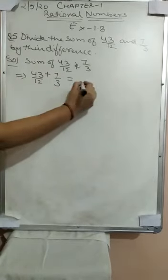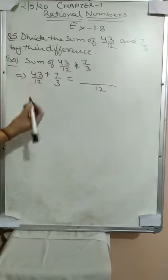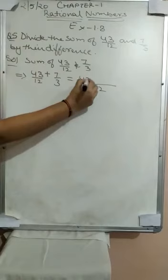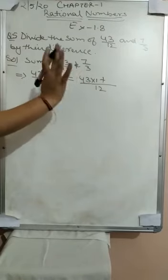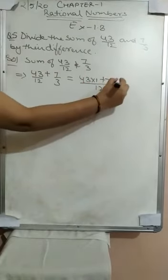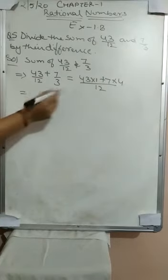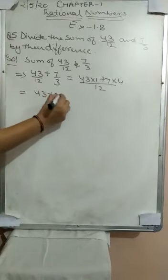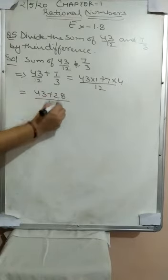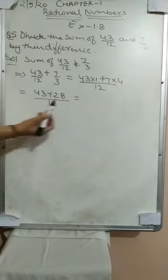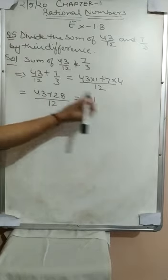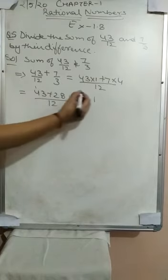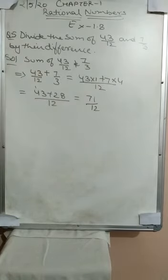Two different denominators are there, so we are going to take the LCM. In 12's table, 12 comes 1 time, so 43 into 1 plus; in 3's table, 12 comes 4 times, so 7 into 4. That gives us 43 plus 28 upon 12. Adding: 8 plus 3 is 11, carry 1; 2 plus 4 is 6, plus 1 is 7. So the sum is 71/12.